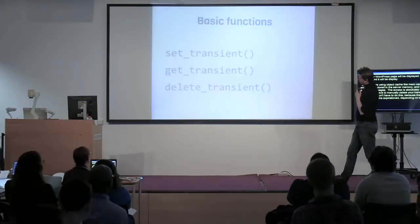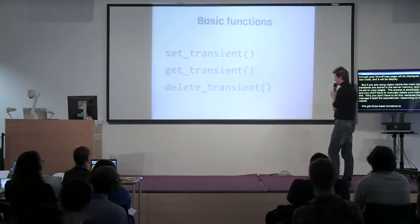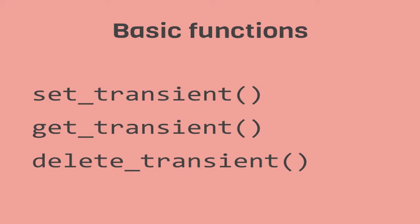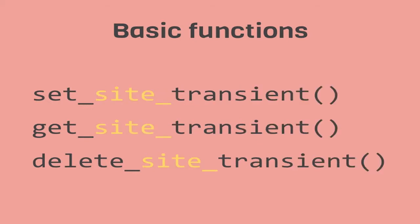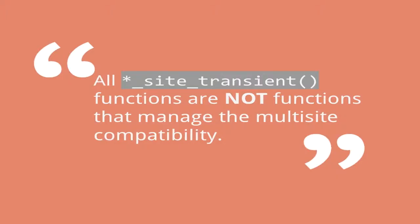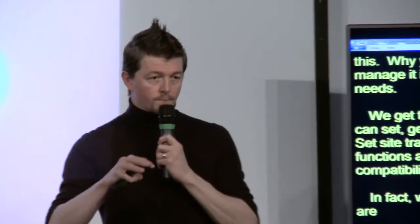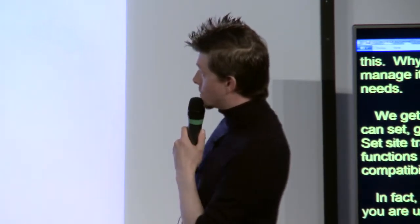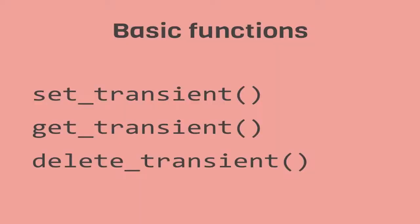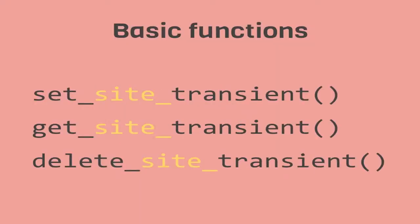Why don't you have to delete them? Because the server will manage itself the expiration depending on its memory needs. We get three basic functions to play with transients: we can set, get, and delete them. We also get the same with set_site_transient. But be careful, because the site transient functions are not the functions that manage multi-site compatibility. When you use the site transient functions and you're not on a multi-site WordPress, it will fall back on set_transient.